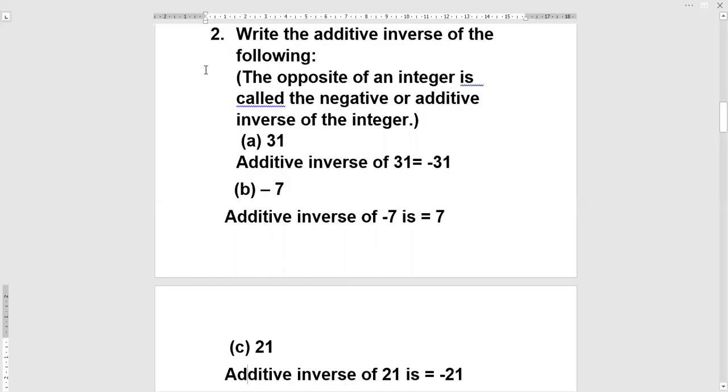Second sum is write the additive inverse of the following. The opposite of an integer is called the negative or additive inverse. The integer which is given, we have to write its opposite. That will be the additive inverse. First part is 31, and additive inverse of 31 is minus 31.